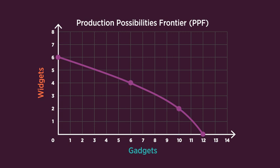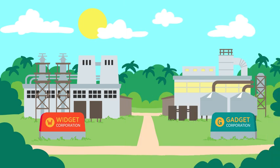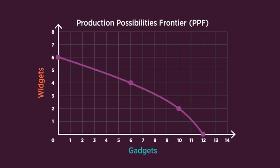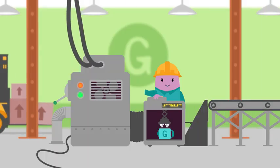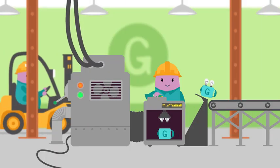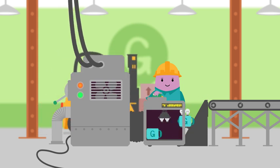If Econ Aisle's production moved in the opposite direction — from all gadgets to all widgets — the law would still hold. As you increase the production of one good, the opportunity cost to produce the additional good increases. Why does this happen? Well, some resources are better suited for some tasks than others.